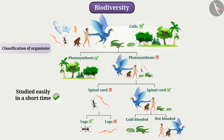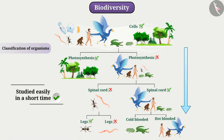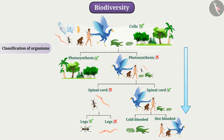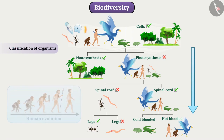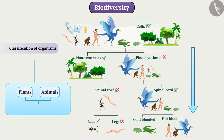Classification is important because by classifying organisms, we can study various organisms easily and systematically. We will find it easy to identify similarities and differences among different groups. From this, we can find out how an organism has evolved, and it will also help us to know how the geographical distribution of plants and animals takes place.